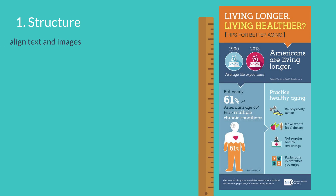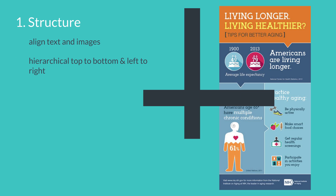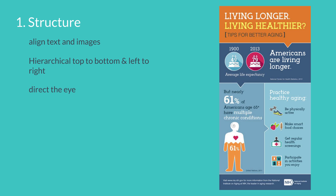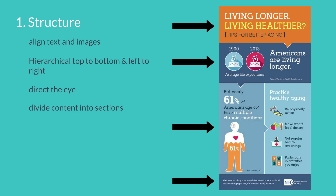Firstly, structure. The text and images should always be aligned. The infographic should contain hierarchy and should be read from top to bottom and left to right. Use elements to direct the eye — in this infographic, they have made use of arrows. Divide the content into sections to make the information more digestible, which also helps to direct the eye.